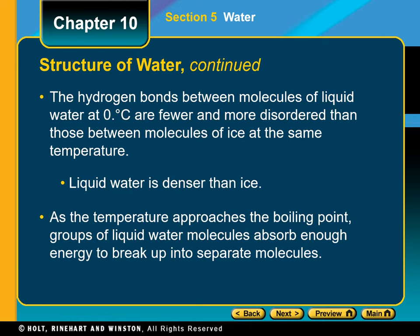As liquid water is warmed from zero degrees Celsius, the water molecules crowd closer together. Water molecules are tightly packed as possible at 3.98 degrees Celsius. At temperatures above 3.98 degrees Celsius, the increasing kinetic energy of the water molecules causes them to overcome molecular attractions, and the molecules move farther apart as the temperature continues to rise.